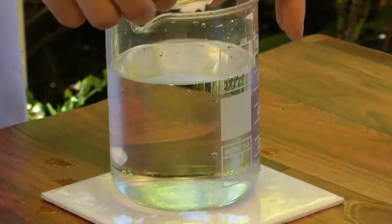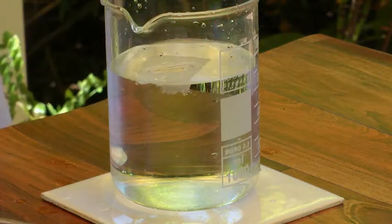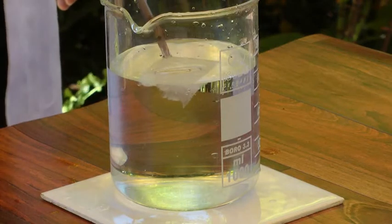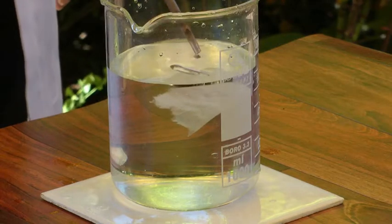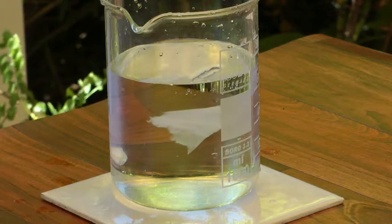It may or may not be easier to float a pin by lowering it with a fork into the water, depending on the skill of the investigator. The same applies for lowering a paper clip onto the surface with a piece of tissue paper. The tissue paper should become wet and sink without pulling down the paper clip.